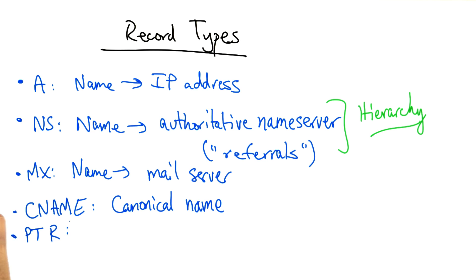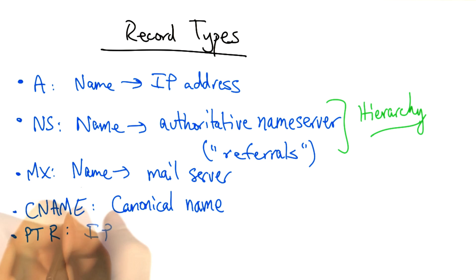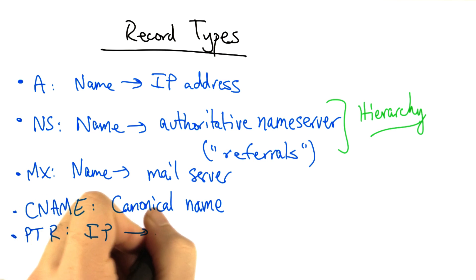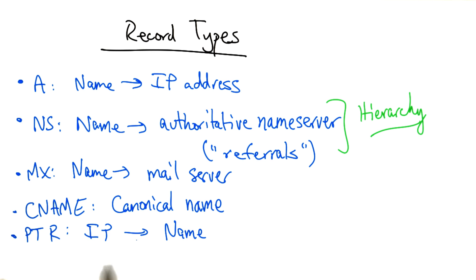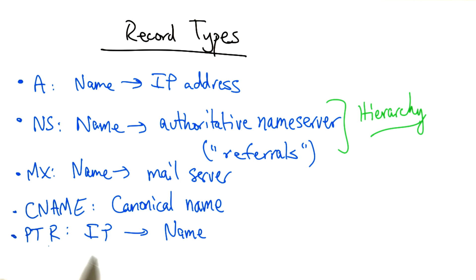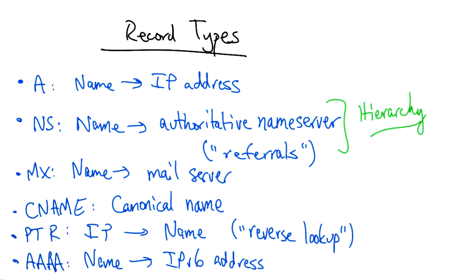The PTR is another record type, and this maps IP addresses to domain names. For example, if you wanted to know the name for a particular IP address, you need to issue a PTR query. This is sometimes called a reverse lookup.